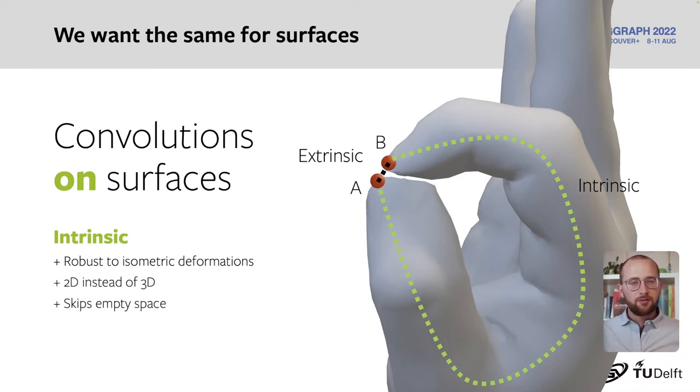We also learn and apply filters in 2D instead of 3D, and we naturally skip empty space, which is more efficient. So just like CNNs fit image data, intrinsic convolutions fit curved surfaces.